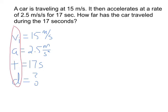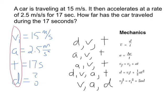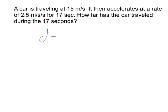Looking at the table, I need a formula with V, A, T, and D. I can see D, V, A, and T listed together — so that's the formula I want. I write it down: D = VI·T + ½·A·T².